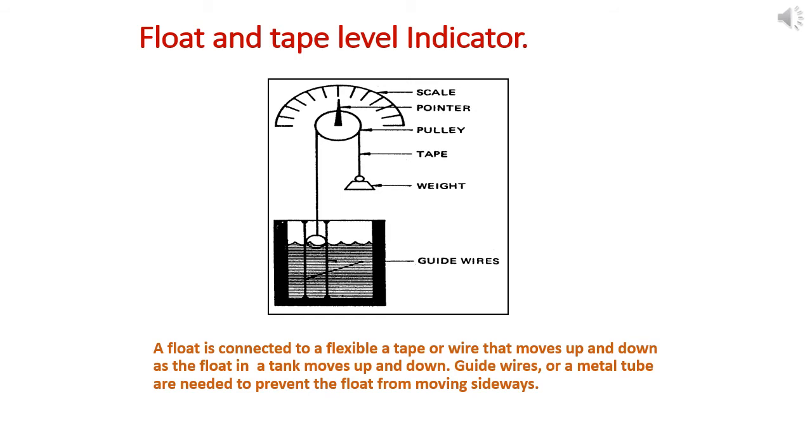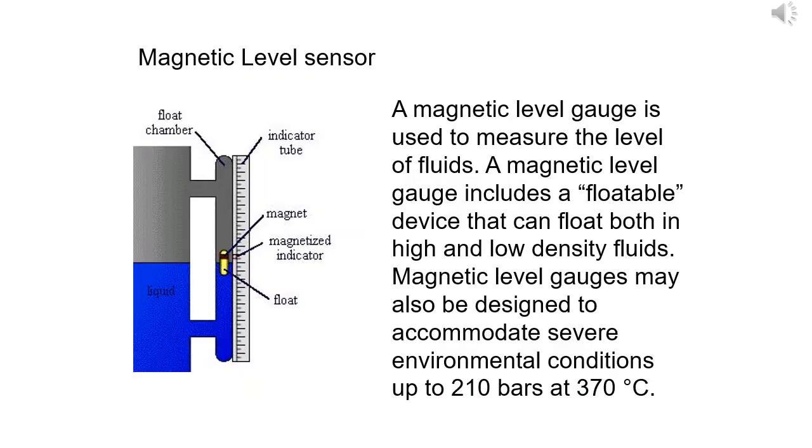Magnetic type level sensor - a magnetic level gauge is used to measure level of fluids. It includes a floatable device that can float in both high and low density fluids. Magnetic level gauges may also be designed to accommodate severe environmental conditions from minus 200 degrees to 370 degrees Celsius.